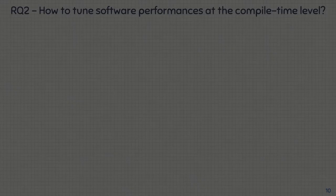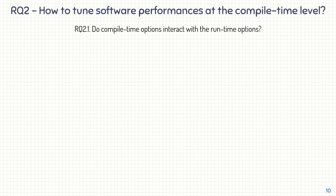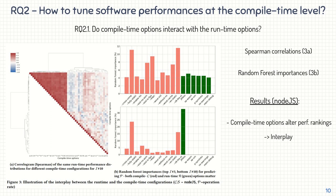To address the second research question — how to tune software performances at the compile time level — we first study how runtime and compile time options interact. We use two indicators: the Spearman correlations between performances of different compile time configurations (figure 3a), and the random forest feature importances when predicting software performances (figure 3b). For Node.js, the most extreme case, there are high positive correlations for many compile time options in figure 3a, but also low correlations for others, showing that compile time options alter runtime performance rankings. In figure 3b, both compile time options (in red) and runtime options (in grey) are important to predict Node.js performances, confirming an interplay between compile time and runtime levels.